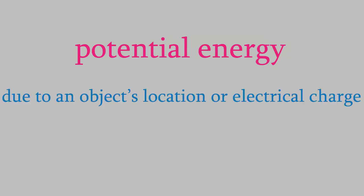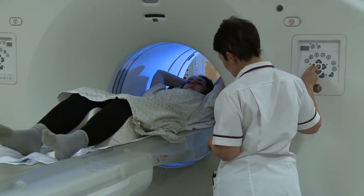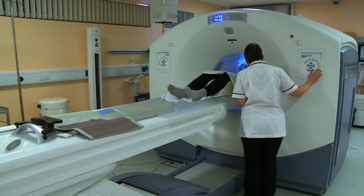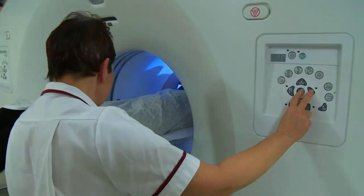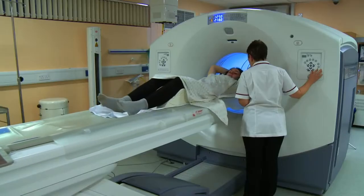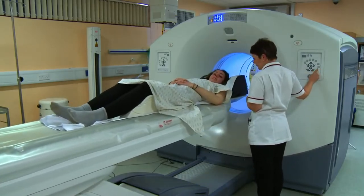We can break energy down into two types. First is potential energy. Potential energy is the energy something has because of its location or because of its electrical charge. For example, an object could have more energy in a magnetic field than it has when it isn't in one. It's the location of the object relative to the magnetic field that gives it more or less potential energy. We'll talk a lot more about potential energy in future videos, and it's something that we care a lot about in the course Physical Chemistry.